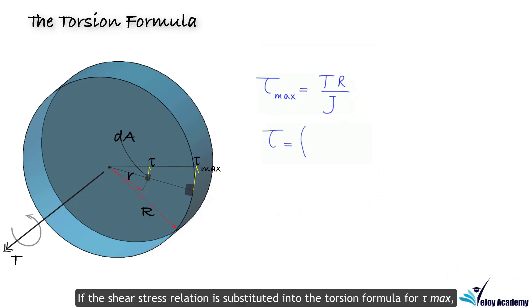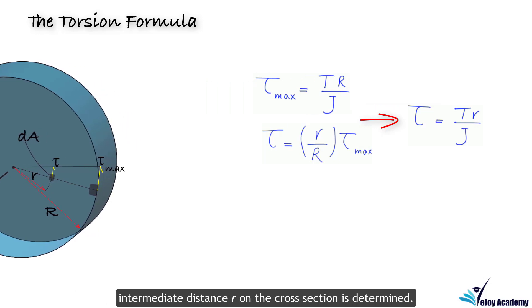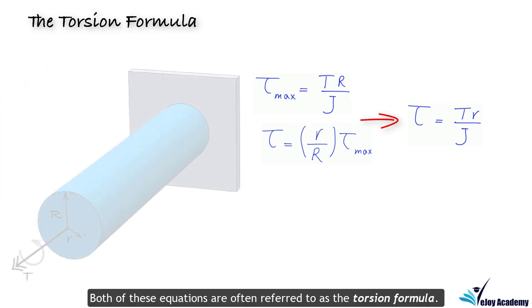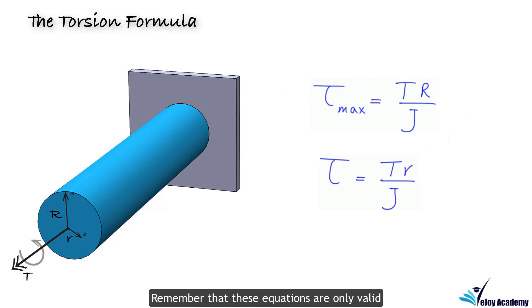If the shear stress relation is substituted into the torsion formula for tau max, another form of the torsion relation for the intermediate distance r on the cross section is determined. Both of these equations are often referred to as the torsion formula. Remember that these equations are only valid when the dimensional assumptions are satisfied.